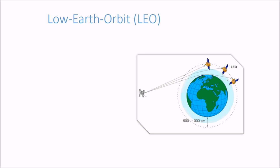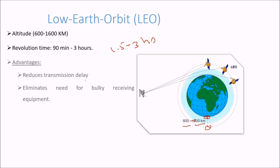This is LEO, low earth orbit. The distance from the surface of the earth can be 600 to 1000 km, so satellites which are orbiting will be 600 to 1000 km. The altitude is 600 to 1600. The revolution time is 90 minutes, around 1.5 to 3 hours. It depends on the distance because distance is also varying. If the distance is higher, then time taken will be higher. The closer it is, the faster it will move.